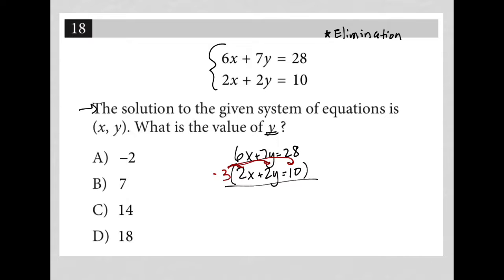then what I'd be left with is my first equation would stay the same, 6x + 7y = 28. But my second equation would now change to -6x - 6y = -30.